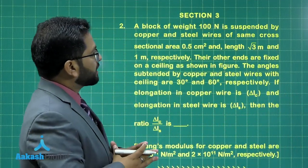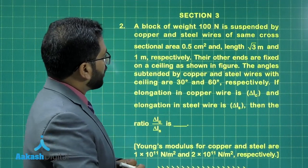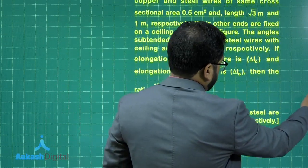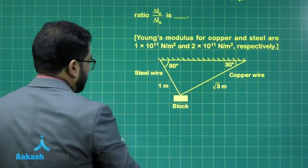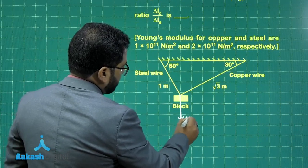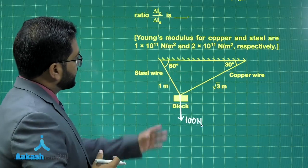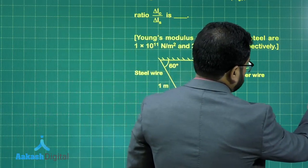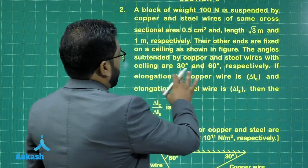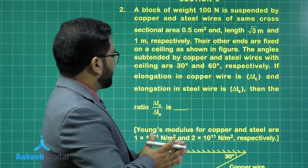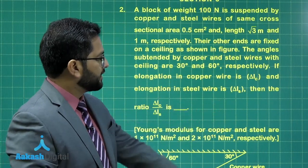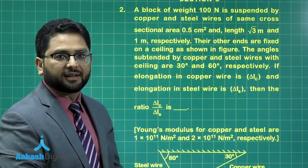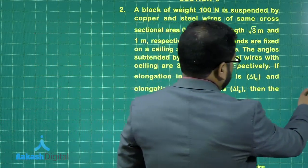The question says: a block of weight 100 Newton is suspended by copper and steel wires of the same cross-section 0.5 cm², and lengths √3 meter and 1 meter respectively. The angles are 60 degrees and 30 degrees as shown in the figure. The elongation in copper and steel are represented by δLc and δLs respectively, and we need to calculate their ratio. Young's modulus values have also been given.